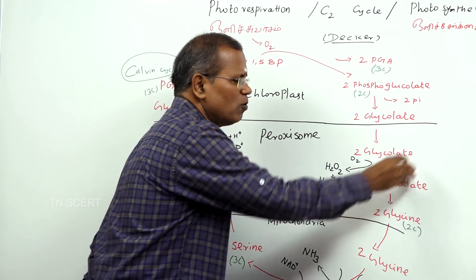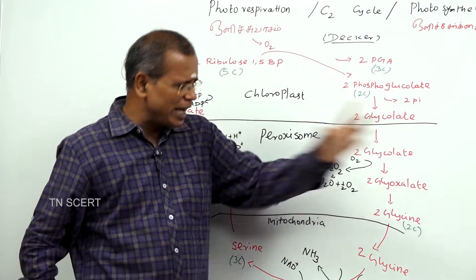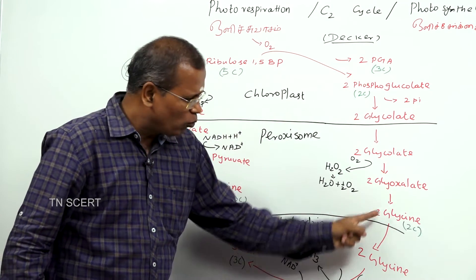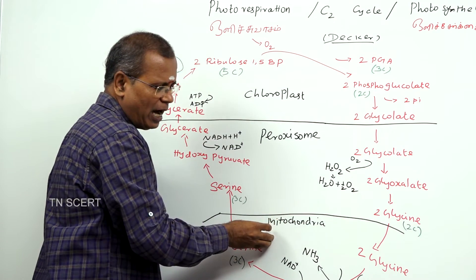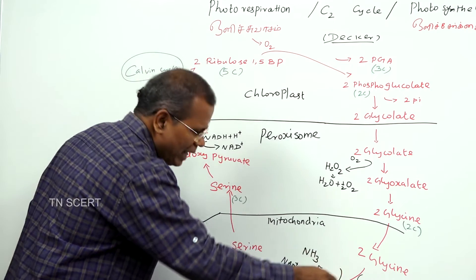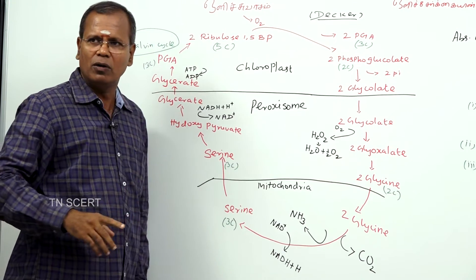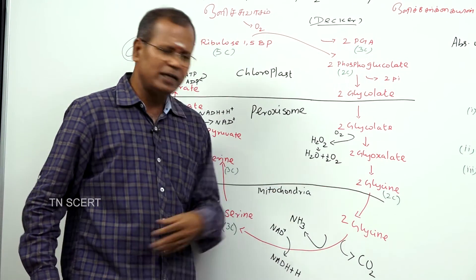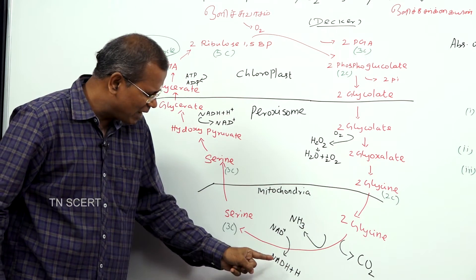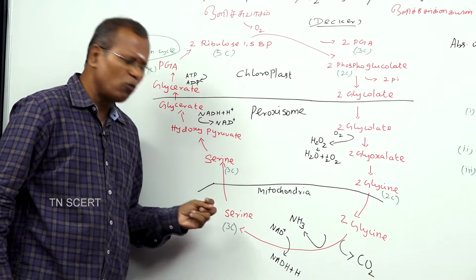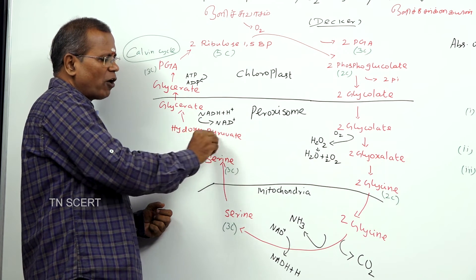Two molecules of glyoxalate are converted into two molecules of glycine. This glycine diffuses into the mitochondria, where it undergoes deamination, decarboxylation, and dehydrogenation to form a serine molecule. In this process, carbon dioxide, ammonia, and hydrogen are released.